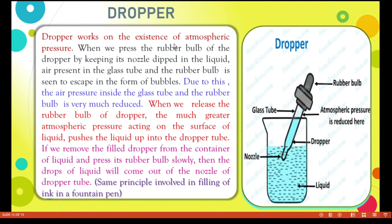A dropper also works on the existence of atmospheric pressure. When we press the rubber bulb of the dropper while its nozzle is dipped in liquid, air inside the glass tube and rubber bulb escapes as bubbles, greatly reducing air pressure inside. When we release the rubber bulb, the much greater atmospheric pressure acting on the surface of the liquid pushes the liquid up into the dropper tube. If we move the filled dropper and press the rubber bulb slowly, drops of liquid come out from the nozzle. The same principle is involved in filling ink in a fountain pen.